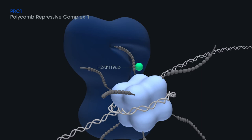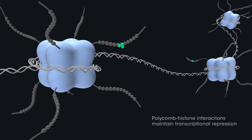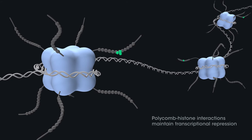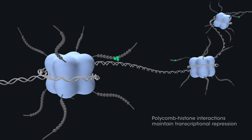Polycomb-histone interactions maintain transcriptional repression via various mechanisms. Repression depends on the catalytic activities of both PRC2 and PRC1, which may vary in distinct cell types or developmental stages.